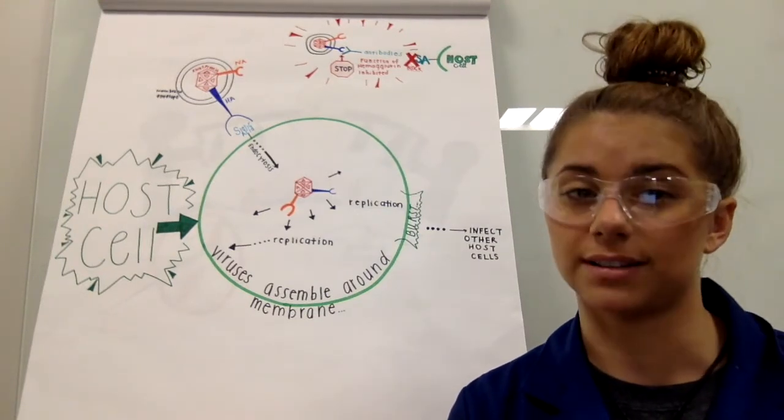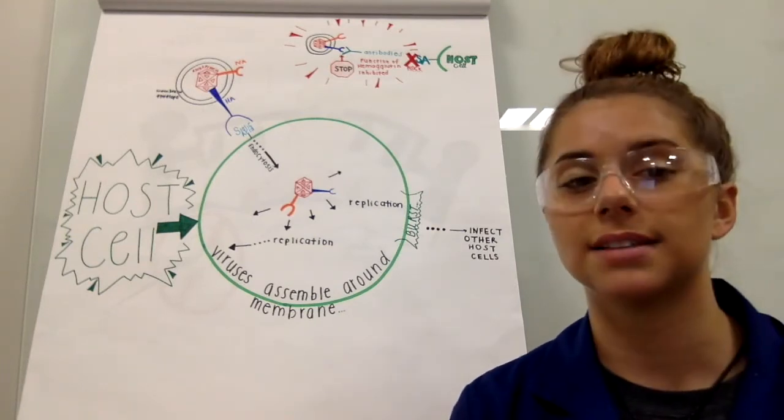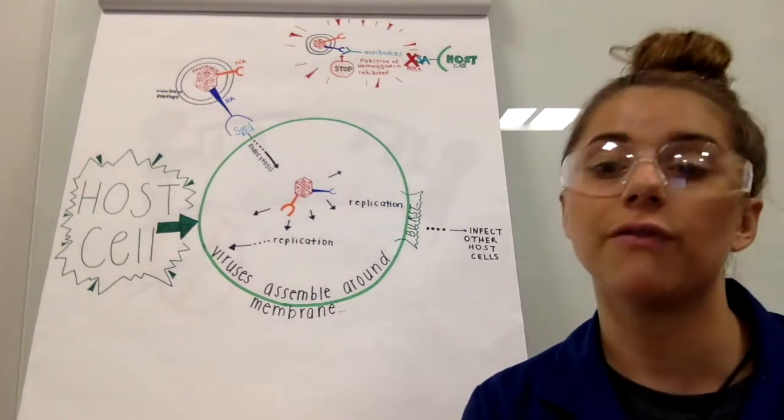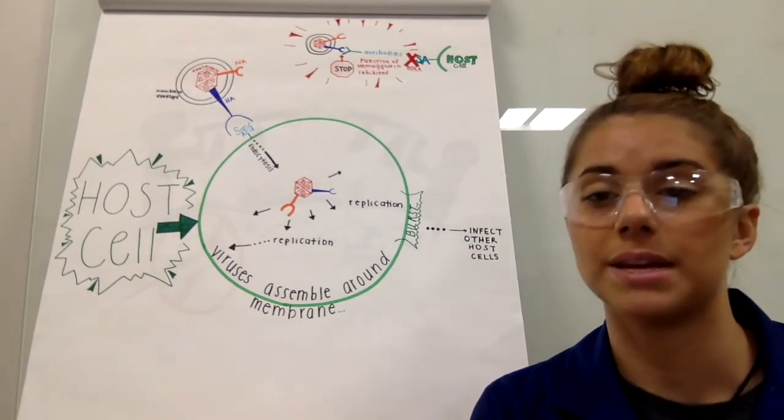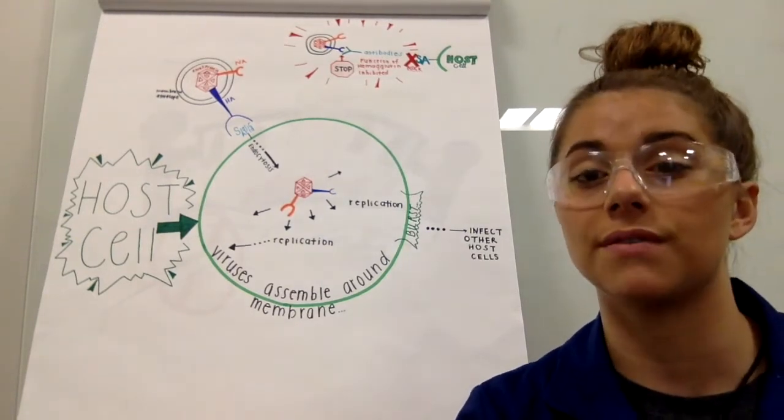If someone has gotten their flu vaccination or simply has natural immunity to a specific strain, antibodies against that strain attach to the hemagglutinin protein on the virus and inhibit the protein from forming bonds with the sugars on the target cell's surface. This prevents the virus from being able to enter the cell, replicate, and create a cascade of viral proteins to infect other cells.